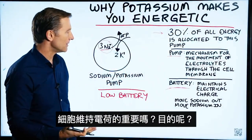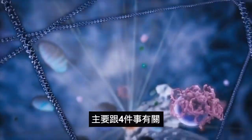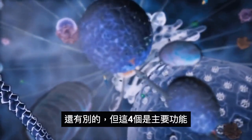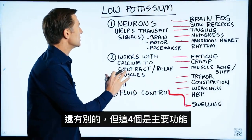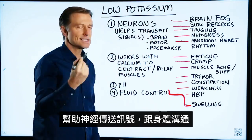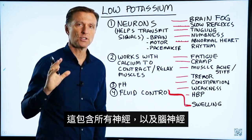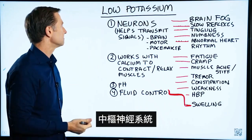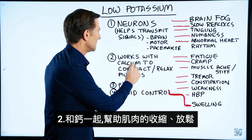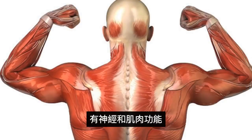The question is: what is the significance of having your cell maintain electrical charge? It has to do with four things primarily. The four primary functions are: first, to support neurons in helping the nerves transmit signals — communication through the body, including nerves in your brain and the central nervous system. Second, to work with calcium to help the muscles contract and relax. So we have nerve function and muscle function.